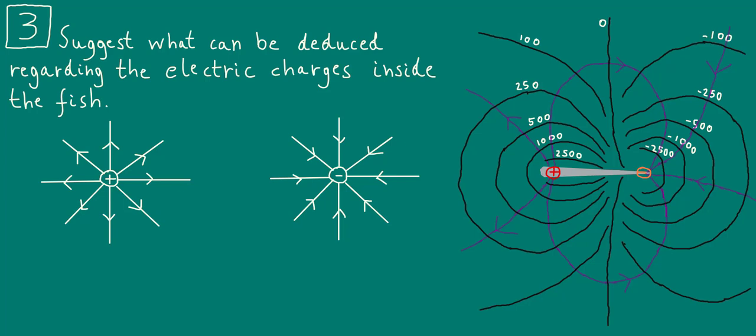Now you might recall from the beginning of the video that I mentioned that in this case study you'd learn a little bit about how electric fish stun their prey. So what happens when these fish encounter relatively large prey is that they first bite their prey and then wrap themselves around the prey something like this. What that does is that the positive and negative charges at the ends of the electric fish are now on opposite sides of their prey, resulting in a relatively strong electric field across the prey, which results in an electric discharge which is enough to paralyze the prey. If you're curious to know more, you can find some links in the description.